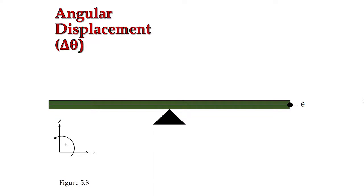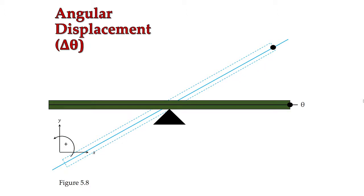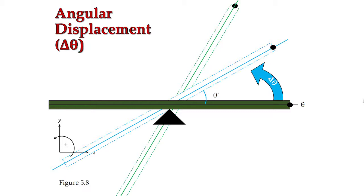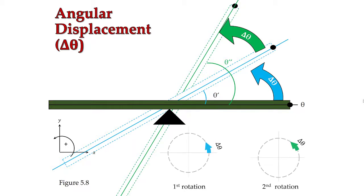For angular displacement, we say that it's going to be a change in our orientation within our frame of reference. If we denote the positive x-axis as an orientation angle of 0, we can make a displacement — rotating within that frame of reference to a new orientation, which we'll call theta prime. The difference in orientations between theta and theta prime is denoted by a counterclockwise curved arrow, which represents that angular quantity. Curved arrows represent angular quantities, as do Greek letters. We can then displace again to another orientation, theta double prime, once more going counterclockwise from theta prime to theta double prime.